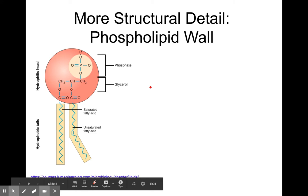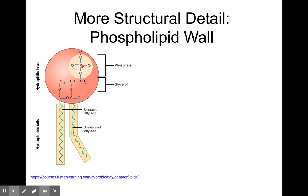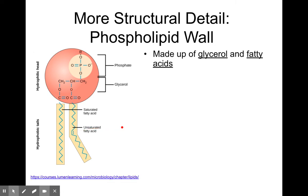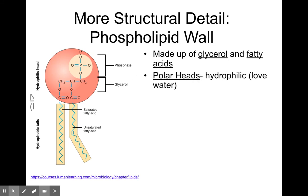Here's an even more detailed structure of a phospholipid. You can see the phosphate with its charge and the glycerol — you build glycerol when you build a fat. The head is labeled hydrophilic, and here are the hydrophobic tails, which are long carbons. Here's a bent unsaturated fat with a double bond. Phospholipids are made up of glycerol and fatty acids. The head is polar and likes water; the tail hates water — it is hydrophobic or non-polar.